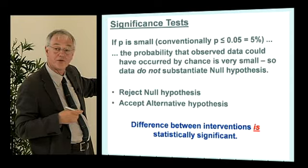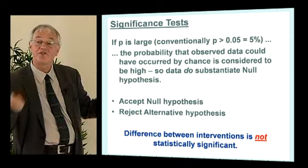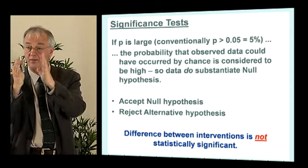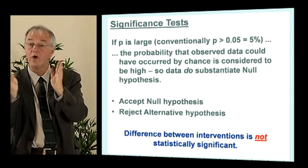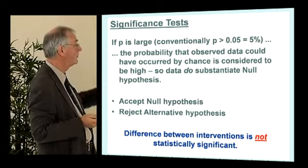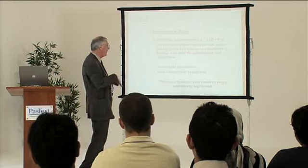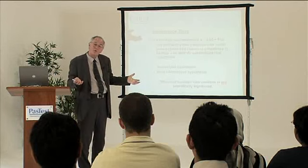Conversely, if p stays above 5%, there's still a reasonable probability of getting this difference when the null hypothesis of no difference is true, so we must accept the null hypothesis. It goes back to the blind watchmaker — this is all about probabilities. There are no absolute answers here; we just make a decision on the balance of probabilities, which means we can get it wrong.